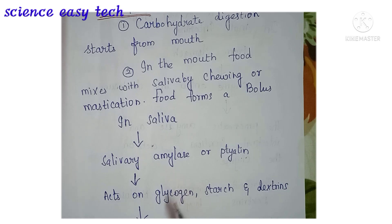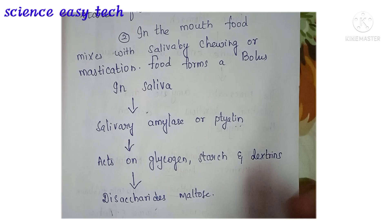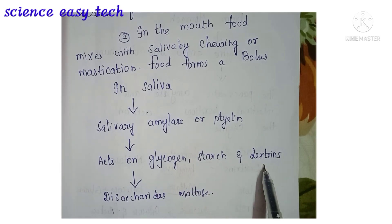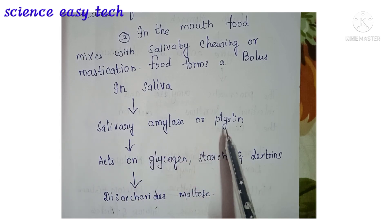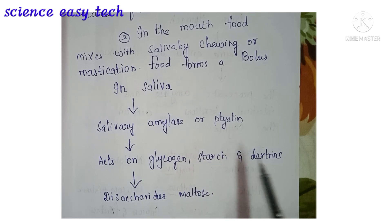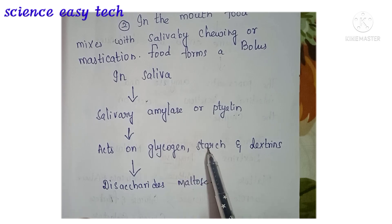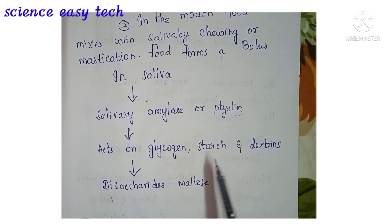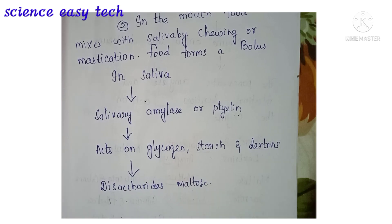This salivary amylase helps in carbohydrate digestion. It acts on glycogen, starch, and dextrins which are present in the food. Salivary amylase, otherwise called ptyalin, acts on glycogen, starch, and dextrins and converts them to disaccharides and maltose. So glycogen, starch, and dextrins — these polysaccharides — are broken down to disaccharides as well as maltose.